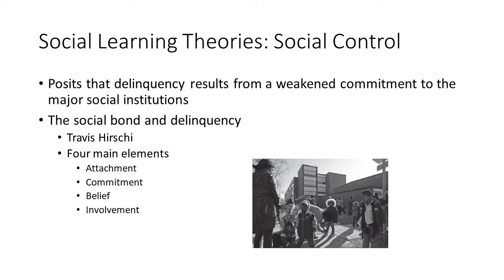Hirschi proposed four elements that help shape social bonds: attachment, commitment, belief, and involvement. Attachment expresses sensitivity to the opinions of others, leading kids to avoid delinquency to avoid disappointing respected individuals like parents or teachers. Commitment involves investment of time, energy, and oneself in conventional activity, with awareness that delinquency would place that investment at risk. Involvement means sufficient time on conventional activities leaves less time for delinquency. Belief refers to the extent one has been socialized into and accepts the common value system, such as respect for the law.